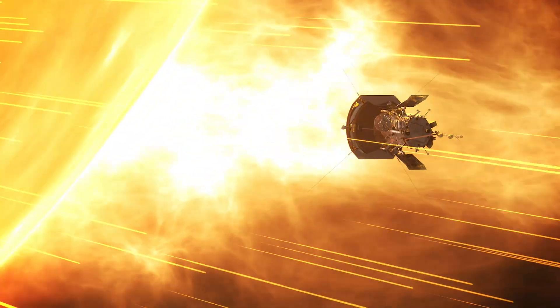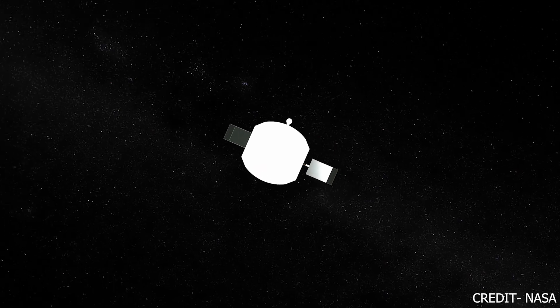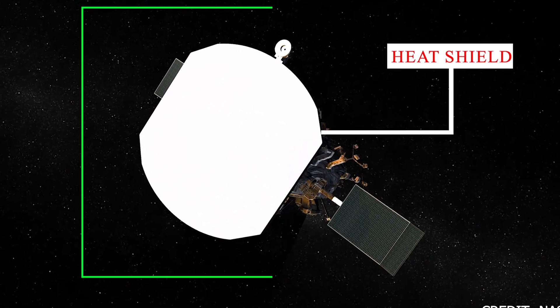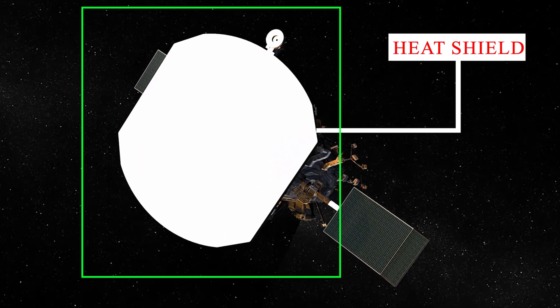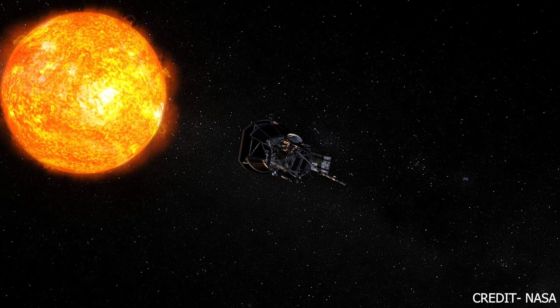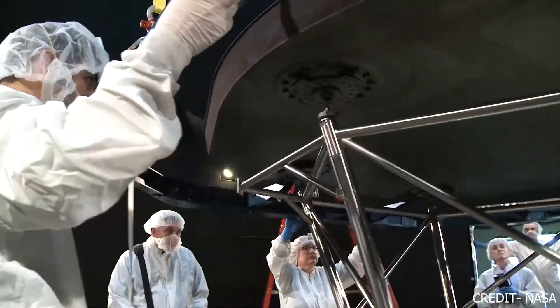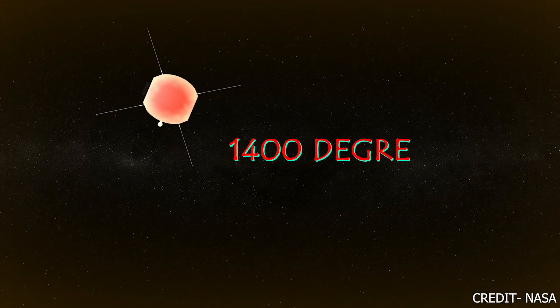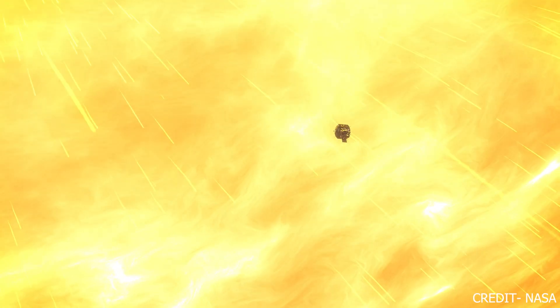To protect the Parker Solar Probe, a heat shield is attached to the front of the spacecraft that always faces the sun and absorbs all the impacts. It has been designed by scientists to withstand a temperature of up to 1400 degrees Celsius, which is still a very high temperature.